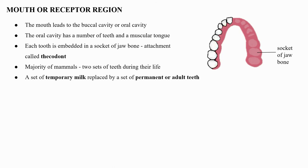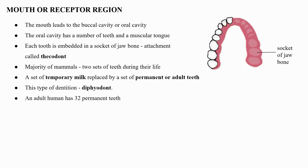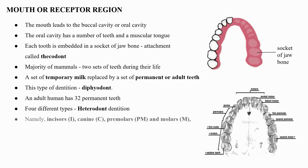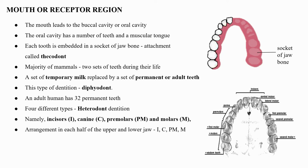This type of dentition is called diphyodont. An adult human has 32 permanent teeth which are of four different types — heterodont dentition — namely incisors (I), canine (C), premolars (PM), and molars (M). The arrangement of teeth in each half of the upper and lower jaw in the order I, C, PM, M is represented by a dental formula.